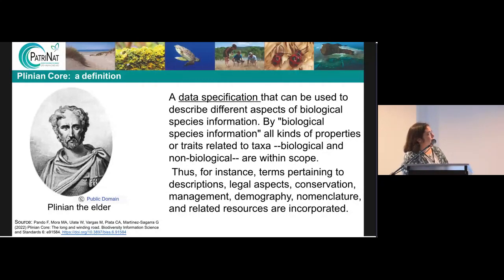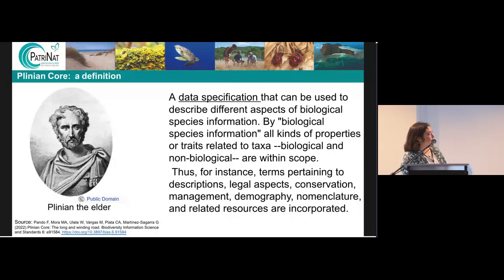Plinian Core's definition is that it's a data specification that can be used to describe different aspects of biological species information — all kinds of properties, especially biological and non-biological traits, so all traits are within its scope. What is really interesting for us, for the Knowledge Base that we are trying to share following the FAIR principles, is that this standard also includes terms that cover legal aspects, conservation, management, demography, nomenclature, and all kinds of taxon-related resources. It looks like a great tool to manage and share a taxon-trait database, and we are really hopeful it will be a successful use case of Plinian Core implementation.